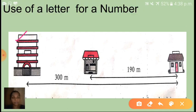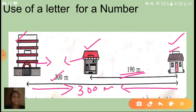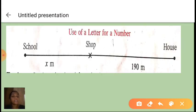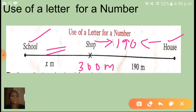Here is one example. Imagine your school is here and your home is here. The distance between your house and your school is 300 meters — that is already given. In between, there is one shop. The distance between the shop and your house is 190 meters. So this distance between the shop and school we don't know, and we can take that as X. That we can take as a variable.